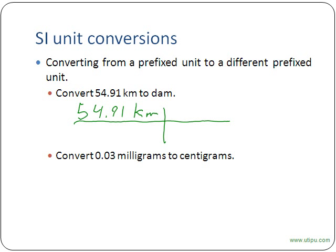We want to get rid of kilometers first, so we put kilometers on the bottom. We want to go to decameters. But if you look at your table, you don't have a conversion between kilometers and decameters — but you do have a conversion between kilometers and meters. So we say one kilometer is how many meters? Kilo means a thousand, or 10 to the third. So one kilometer is a thousand meters. This cancels kilometers and leaves us with meters. But we don't want to end up in meters — we want to end up in decameters.